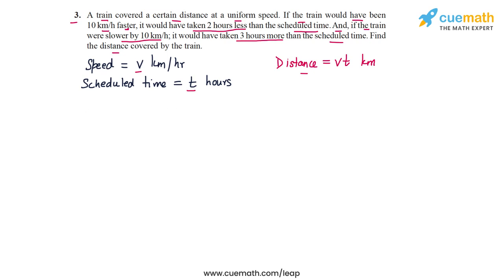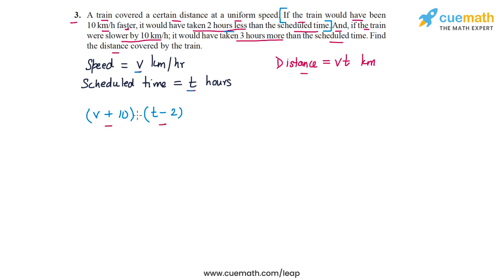Now let's set up a pair of equations in v and t. The first piece of information says if the train were 10 kilometers per hour faster, it would have taken two hours less than the scheduled time. So the new speed is v plus 10 and the new time is t minus 2. The key idea is that the distance covered is still the same, so the product of the new speed and new time must equal vt.